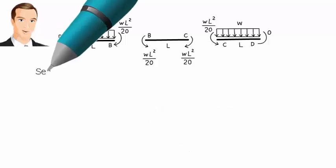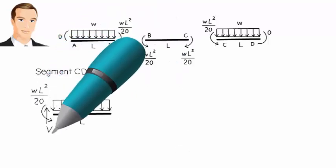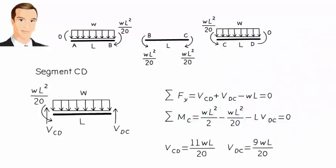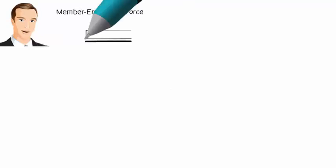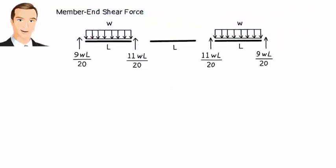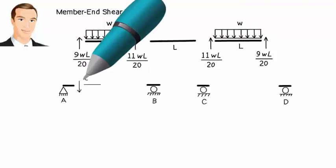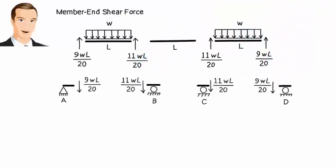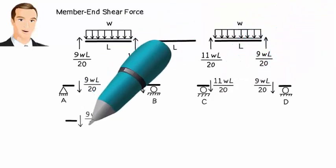For segment CD, we have the corresponding calculations. Here is the free body diagram of the three segments showing the member end shear forces. These forces also act at the joints, allowing us to determine the support reactions.